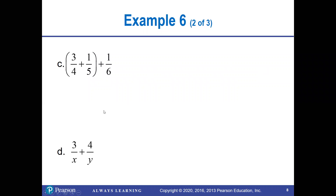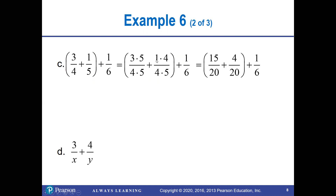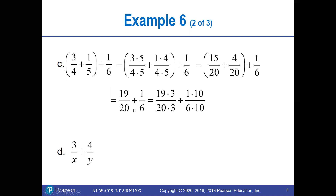In example 6, because addition is commutative, you can get all terms to a common denominator. They get a common denominator of 20 inside the parentheses first (order of operations), giving 15/20 + 4/20 = 19/20. Then add 1/6, requiring a common denominator between 20 and 6. Multiplying by 3 and 10 respectively gives a common denominator of 60: 57/60 + 10/60 = 67/60, which does not reduce.